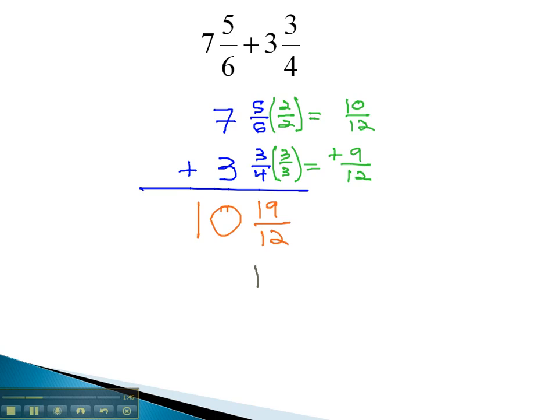12 goes into 19 once, and then the remainder is going to be 7. So we have 1 and 7 twelfths represents those 19 twelfths. Well, now we have 10 whole numbers, and an extra 1 whole number is going to give us a total of 11 whole numbers, and then the fraction of 7 twelfths to give us our final sum of 11 and 7 twelfths.